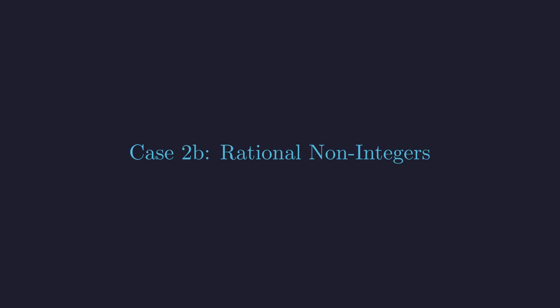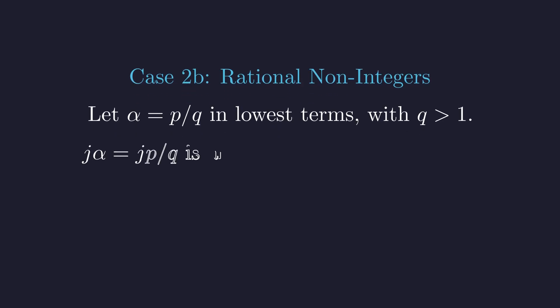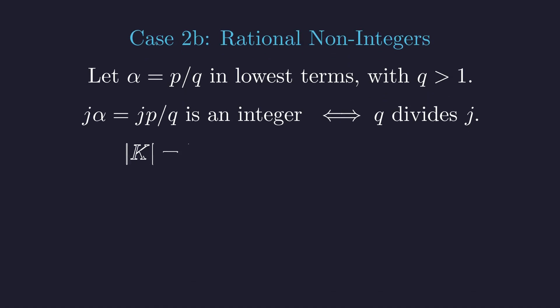Finally, we analyze rational non-integers. Let alpha be a rational number p over q in lowest terms, where the denominator q is greater than 1. j times alpha is an integer if and only if q divides j, since p and q are co-prime. The size of our set k is the number of multiples of q up to n, which is the floor of n over q.